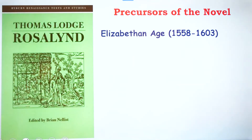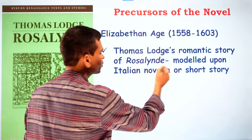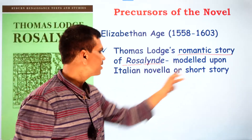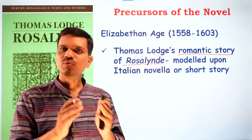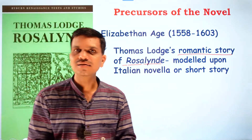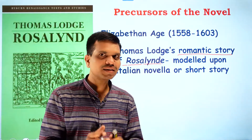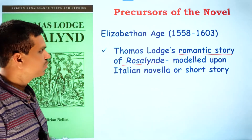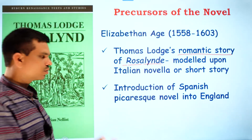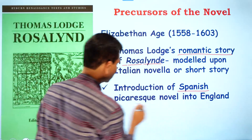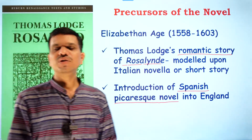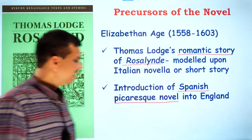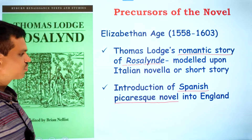In the Elizabethan age we also have Thomas Lodge's Rosalind, a romantic story of the character Rosalind, modeled upon an Italian novella or short story. Later, William Shakespeare used this story in his As You Like It. In the same period, the introduction of the Spanish picaresque novel also became very important, as it gave way to the development of the English novel.